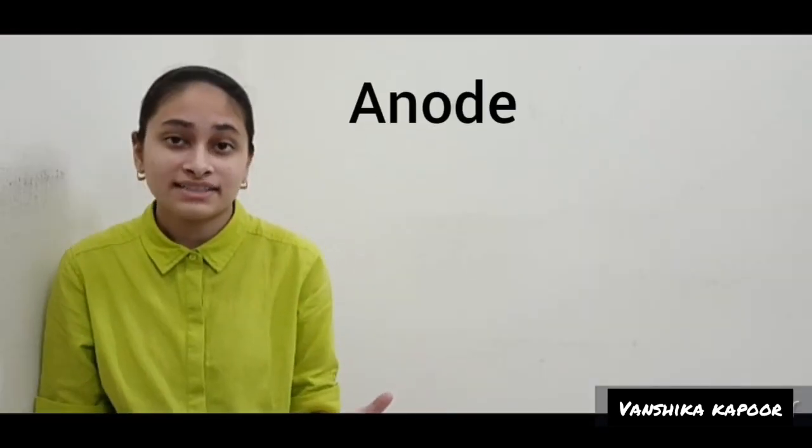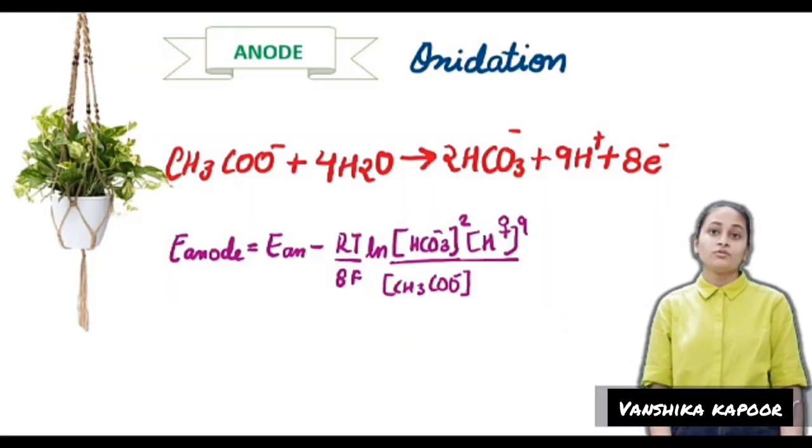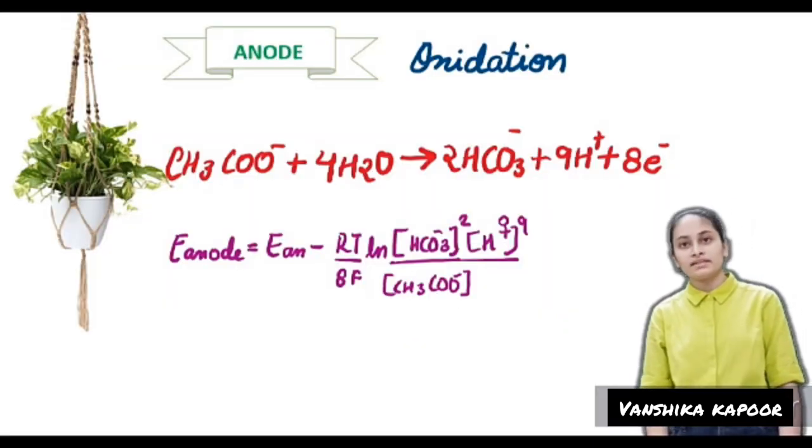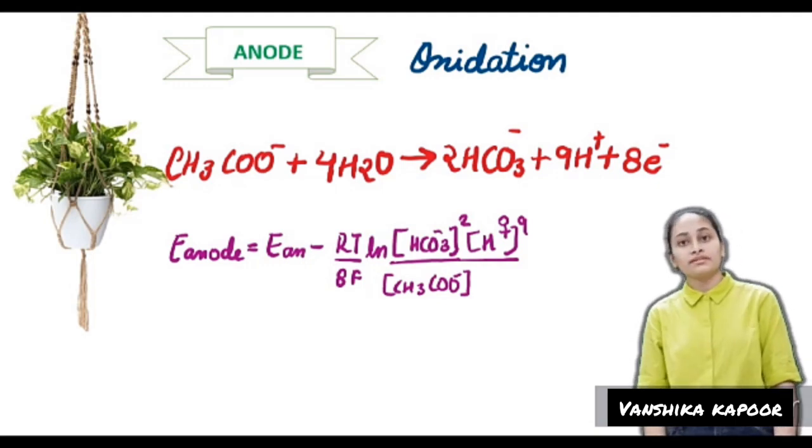Let's look at this anode and cathode. We are taking acetate as a model substrate. At anode, oxidation of acetate ion takes place. The electrons are used for electricity production.